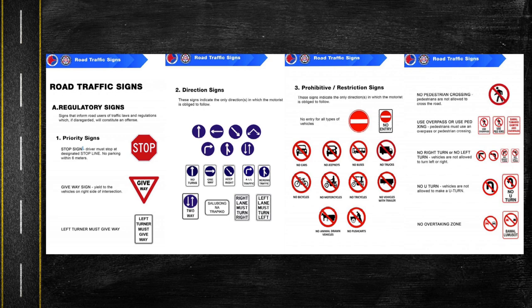Under restriction signs we see no entry for all types of vehicle, as well as signs for specific vehicle types that are not allowed. There is also no pedestrian crossing — use overpass or pedestrian crossing instead. And of course no right turn, no left turn, no U-turn, and the no overtaking zone.